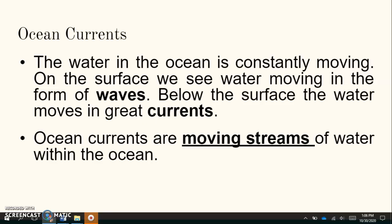So on the surface we do see the water moving in the form of waves and below the surface the water moves in currents. So the movement on top are the waves and below are the currents. Ocean currents are moving streams of water within the ocean.